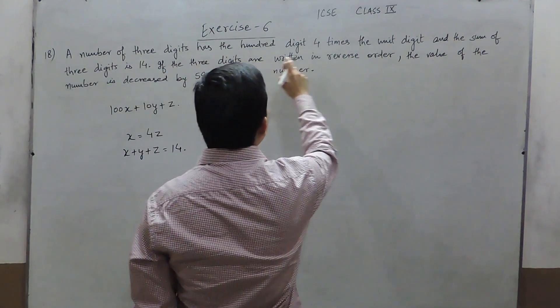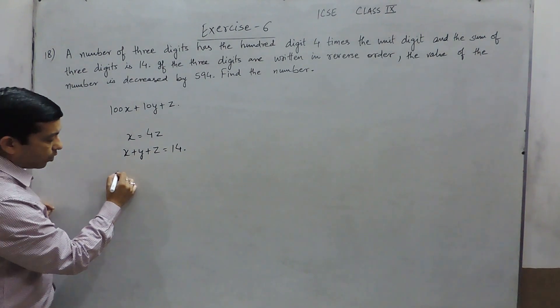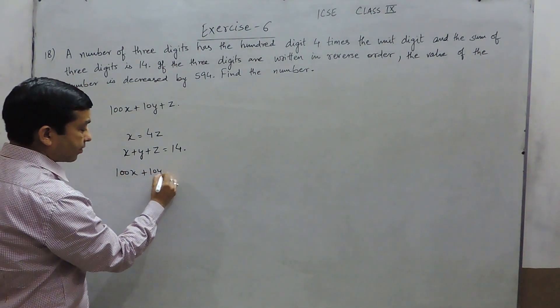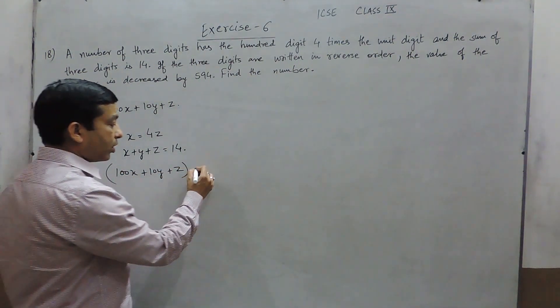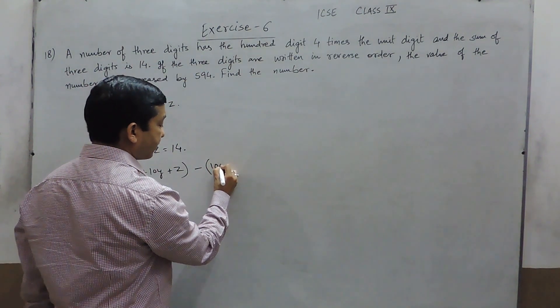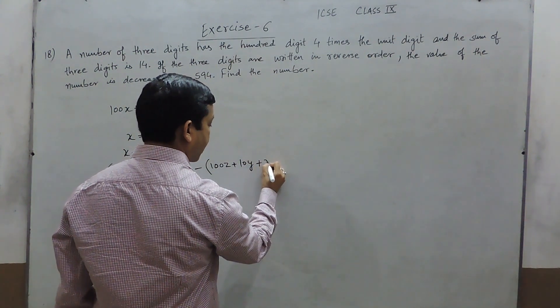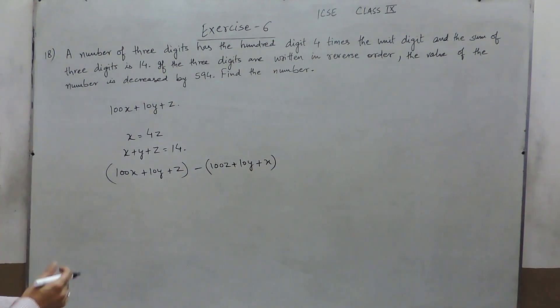The third condition is if the 3 digits are written in reverse order, the value of the number is decreased by 594. It means 100x plus 10y plus z. Now if I write in the reverse order, this will become 100z plus 10y plus x. The middle digit will remain as it is because if there is a 3 digit number like 325 written in reverse order, it will become 523.